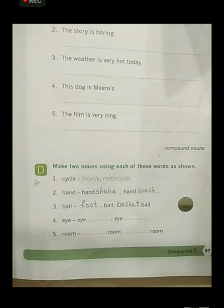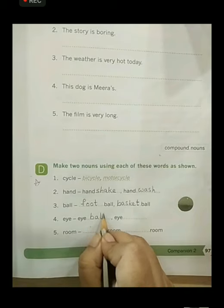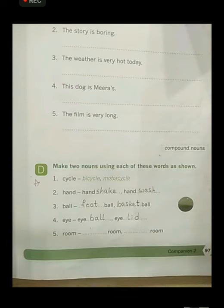Next one. Fourth one. That is eye. So, we can write here eyeball. E-Y-E-B-A-L-L. And eyelid. E-Y-E-L-I-D. Now, what is eyeball? When you see in the mirror children, and you look into your eyes, you will find a round ball over there. That is what we call eyeball.